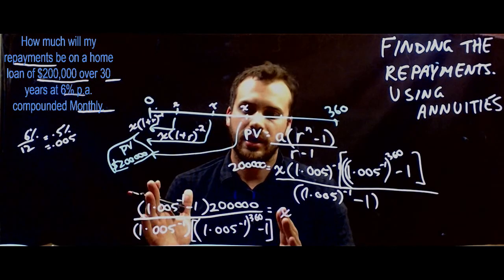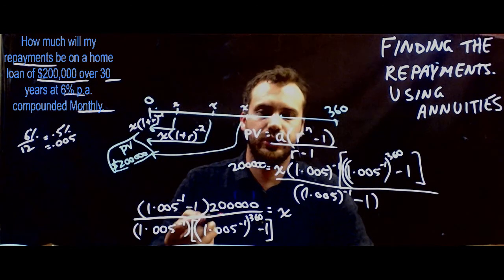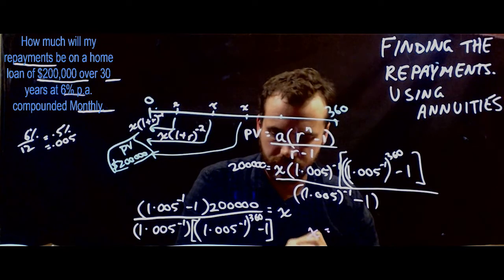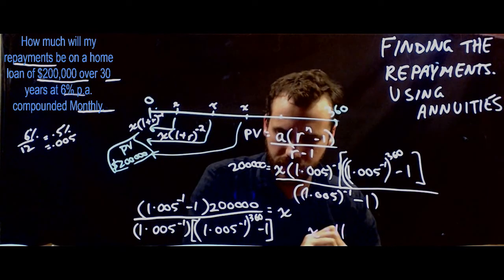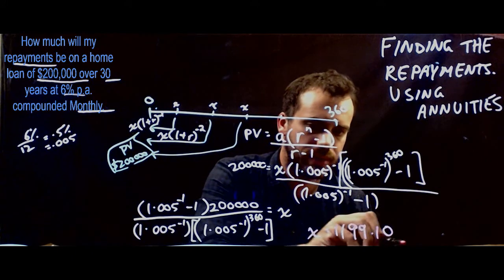Now I'll just jump through all of that. Pretty simple stuff. Type that into your calculator. You should get an answer. And we should get a final answer according to my calculator of X equals $1199.10.